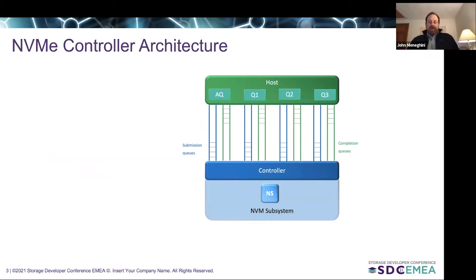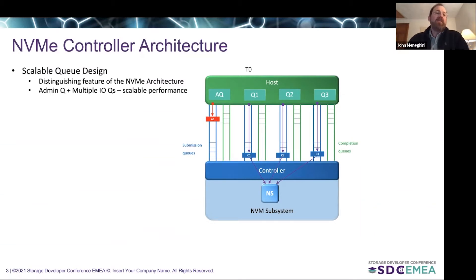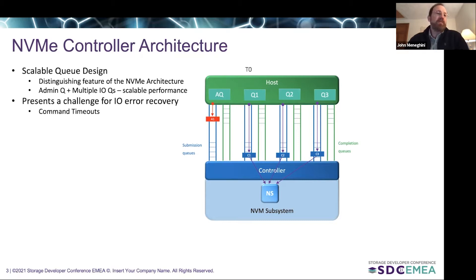The NVMe controller provides a scalable queue design — this is the distinguishing feature of the NVMe architecture. It consists of an admin queue and multiple IO queues that allow scalable performance for applications that want to scale out IO in parallel. This really sets NVMe apart from other protocols. However, this controller structure and queue design presents some challenges for IO recovery, especially when it comes to command timeouts.